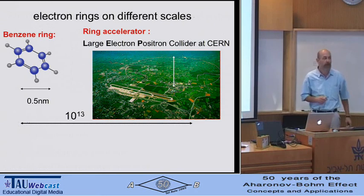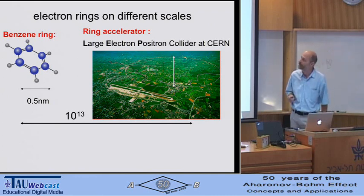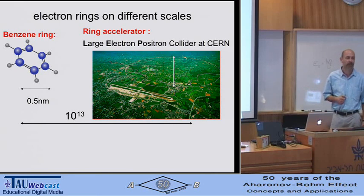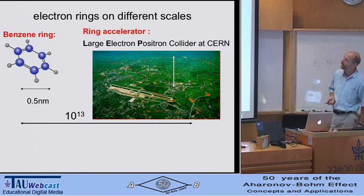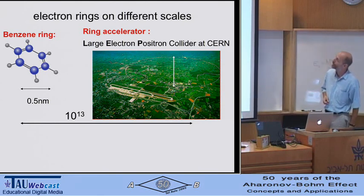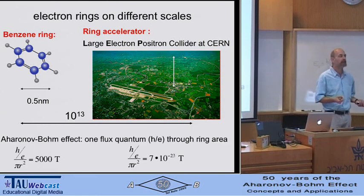Let me compare the typical mesoscopic rings to other rings. The smallest ring we have is a benzene ring—about half a nanometer in diameter. And here is the predecessor of the LHC. If you look at the orders of magnitude difference in length scale and apply a simple Aharonov-Bohm argument to these two ring structures, you can ask: how many Tesla do I need to add one flux quantum through the system?